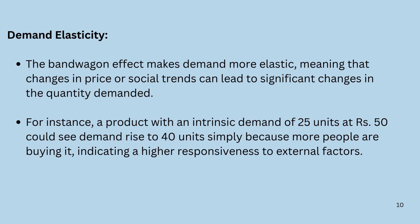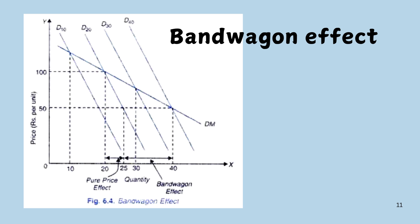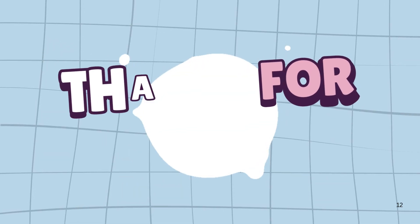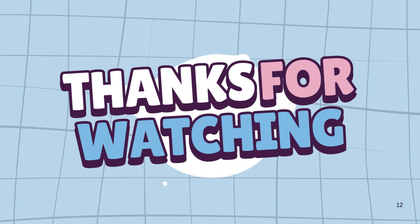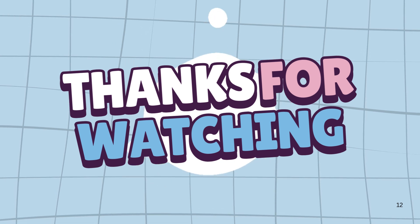To summarize, the Bandwagon Effect key features include: network externality, price-demand relationship, backward-shifting demand, social influence, marketing strategy, and demand elasticity. This is all we discussed in the class. Thank you.